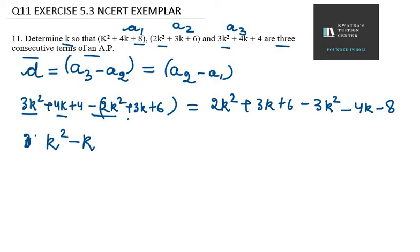On the right side: 2k² minus 3k² leaves -k². Working through the signs: 3k² and minus 4k² leaves -k². And 6 minus 8 leaves -2. So the right side is -k² + k - 2.